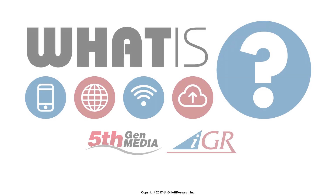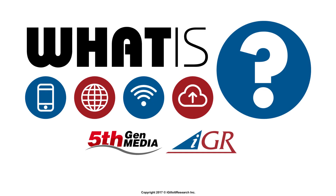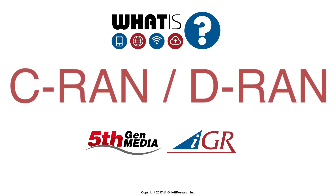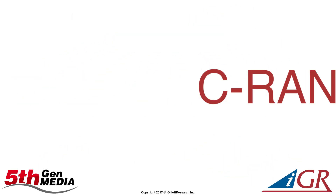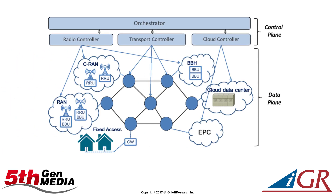For this video in the What Is series brought to you by IGR and 5th Gen Media, we will be discussing C-RAN and D-RAN. The RAN, or radio access network, is typically defined as antenna on the tower, the transceiver or radio, and the base band unit, or BBU.